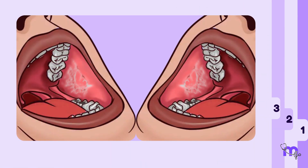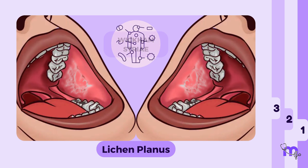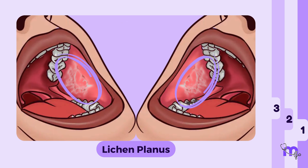For a patient with multifocal or diffuse pigmentation who also has a white lesion with characteristic Wickham striae bilaterally in the oral cavity, this suggests the possibility of lichen planus. Lichen planus is an autoimmune condition that manifests with pigmentation as a secondary feature.